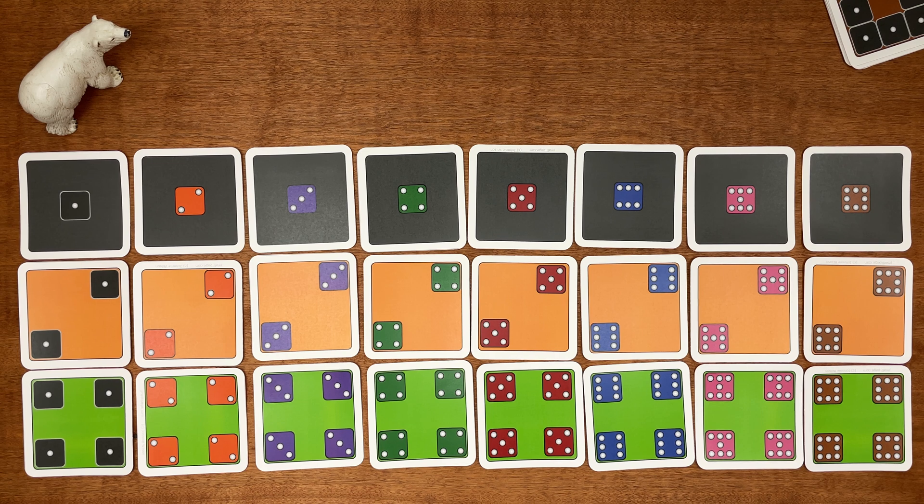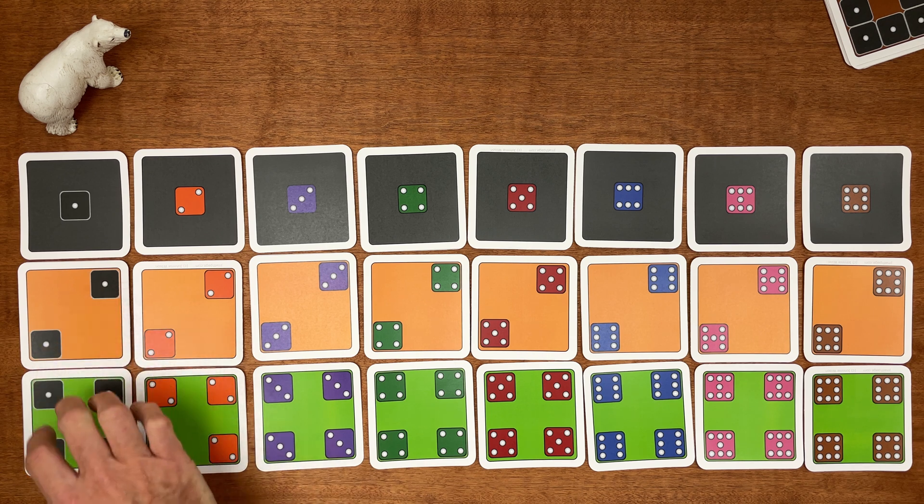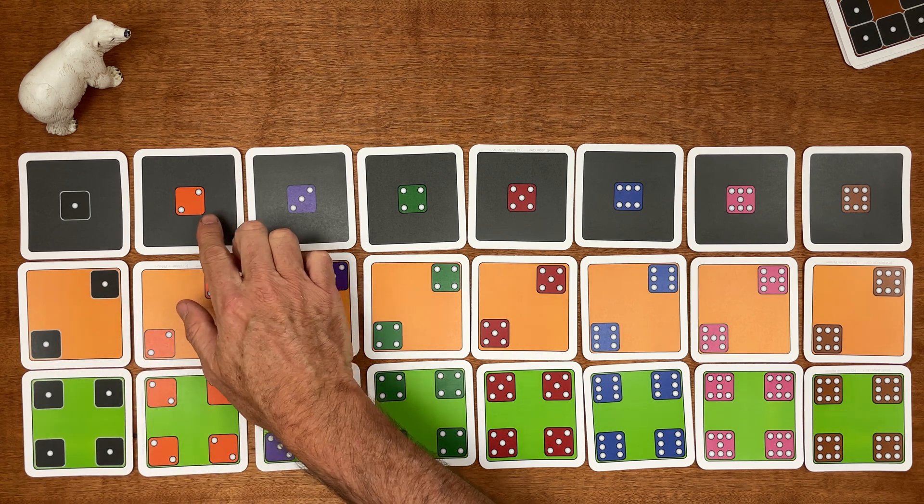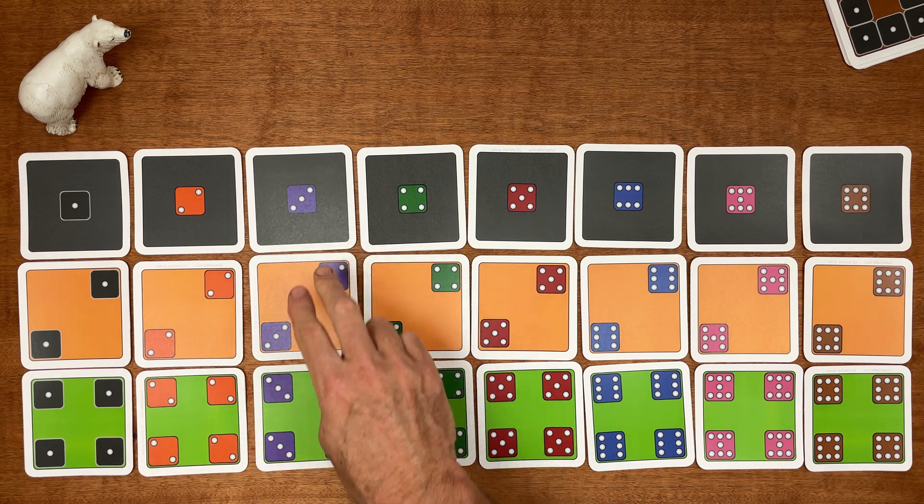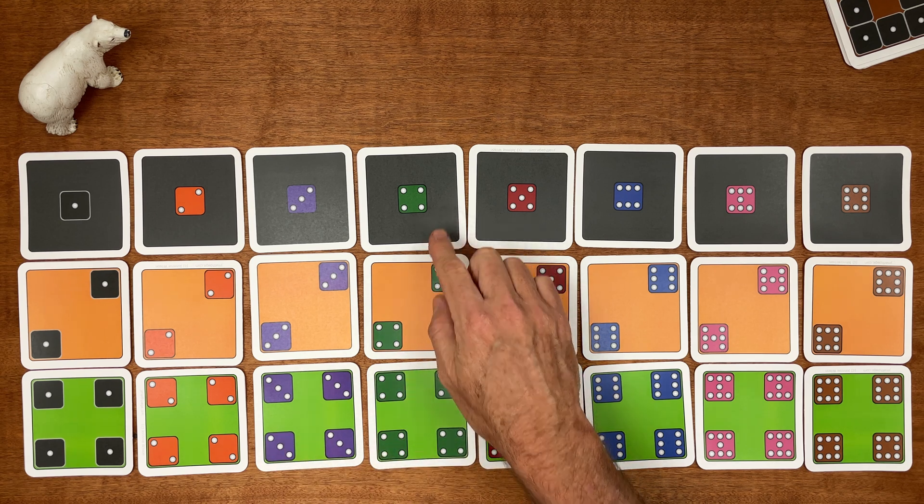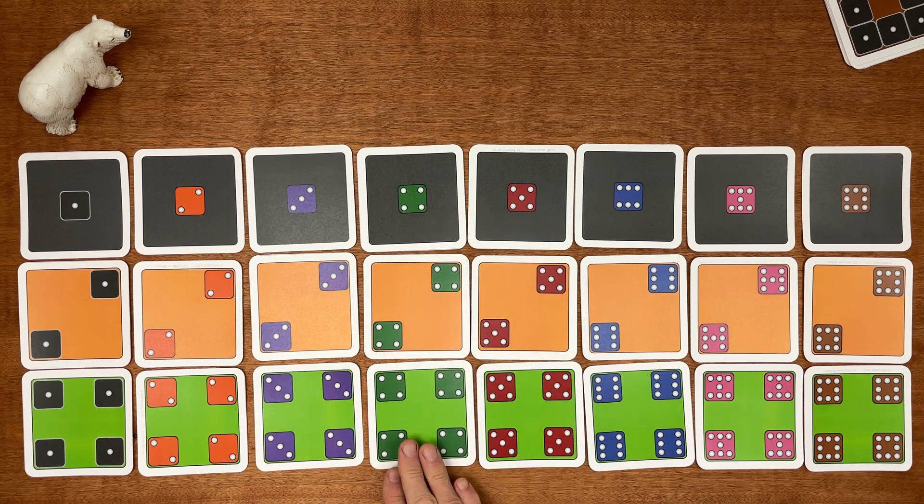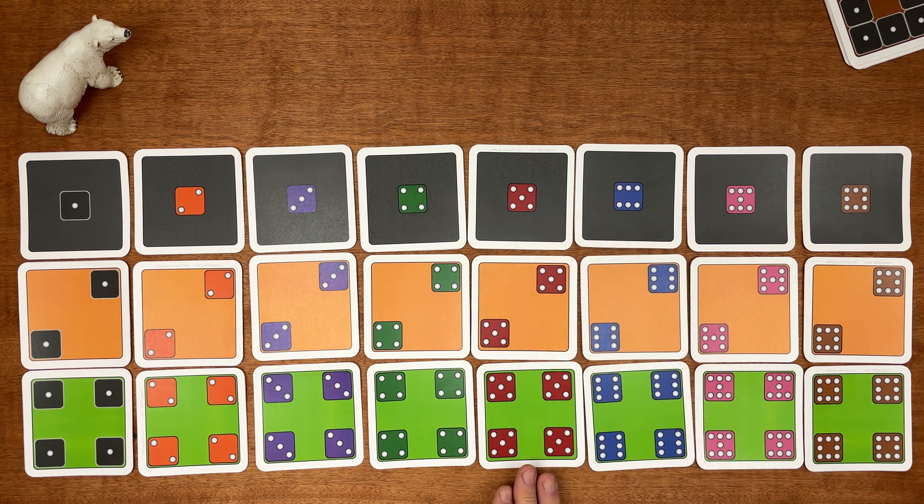But there's some differences too. There was one one here, two ones, now four ones. One two, two twos, four twos. One three, two threes, four threes. One four, two fours, four fours. One five, two fives, four fives.